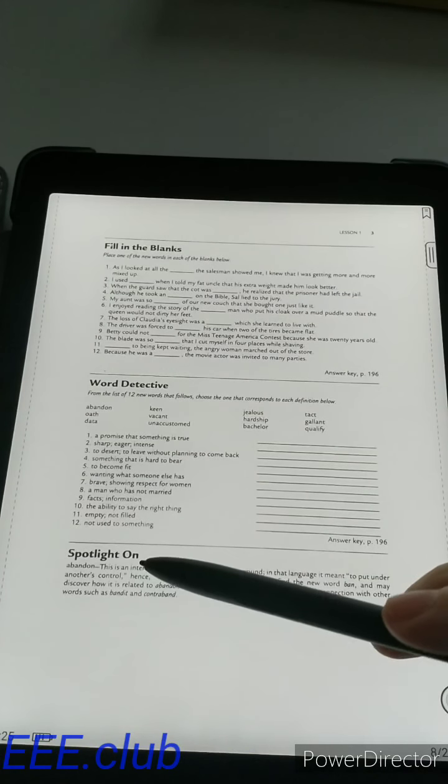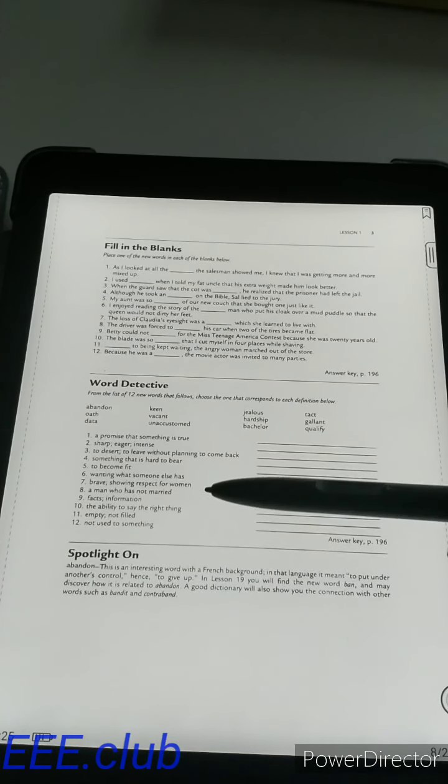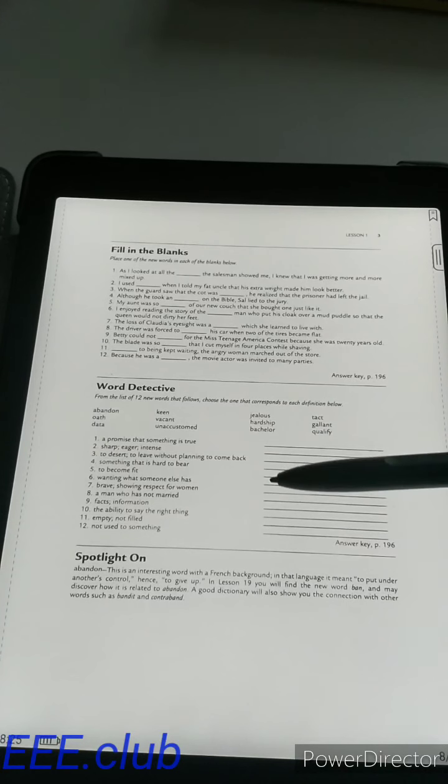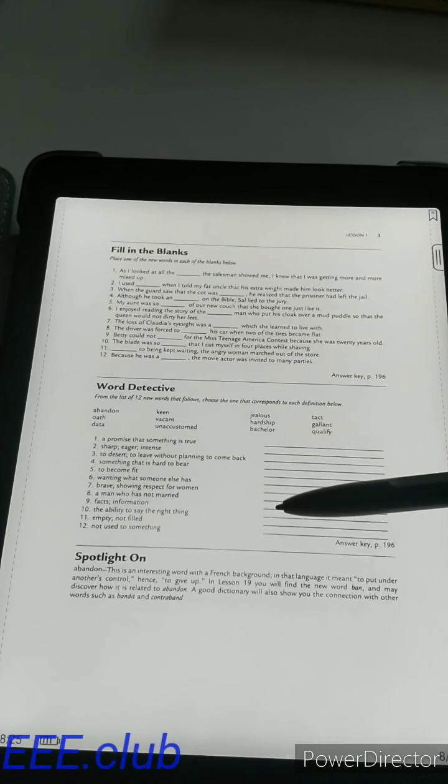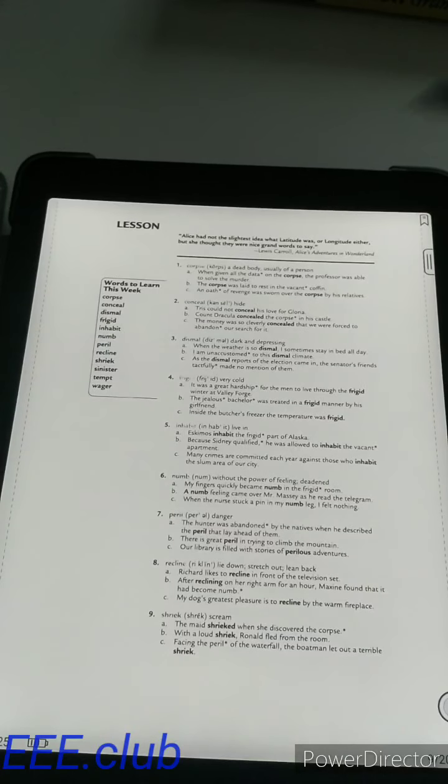And then there is the Spotlight On. The Spotlight On gives you the origin of one of the words or two of the words that you have just learned, like it comes from French, comes from Latin, etc. The book moves on the same pattern.